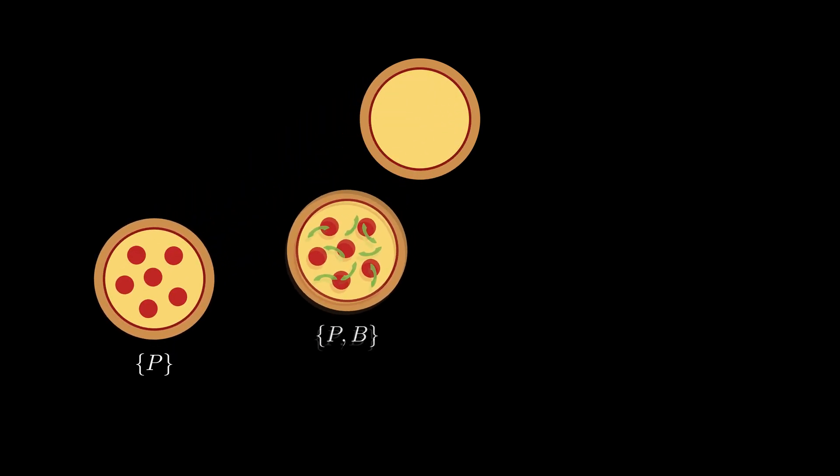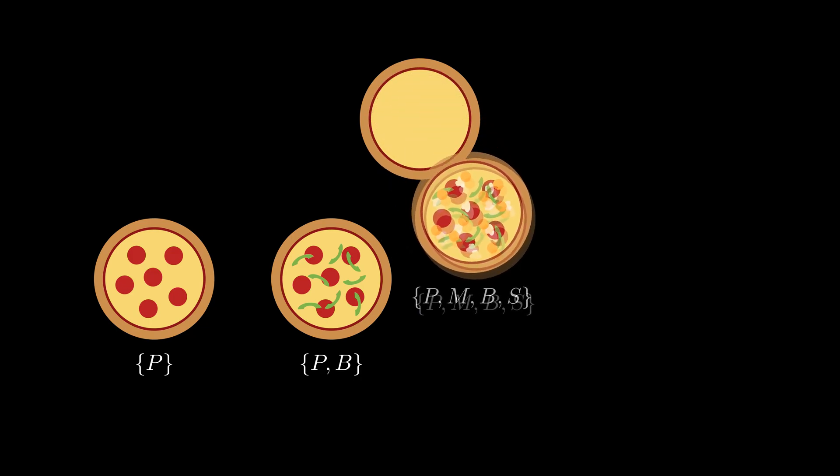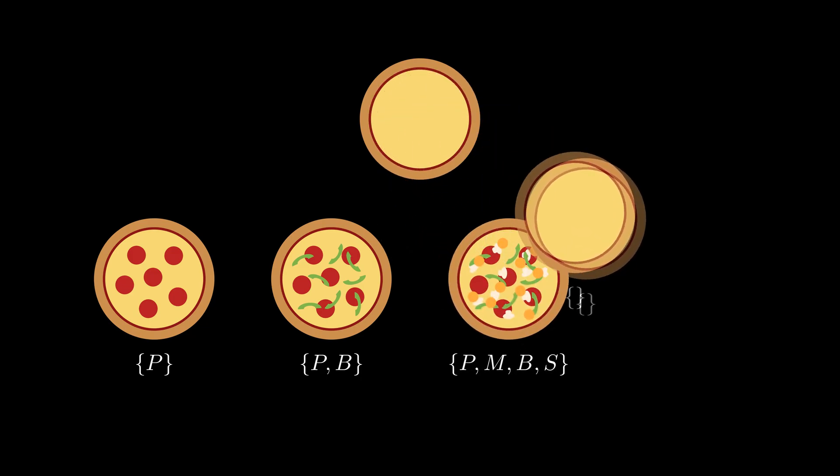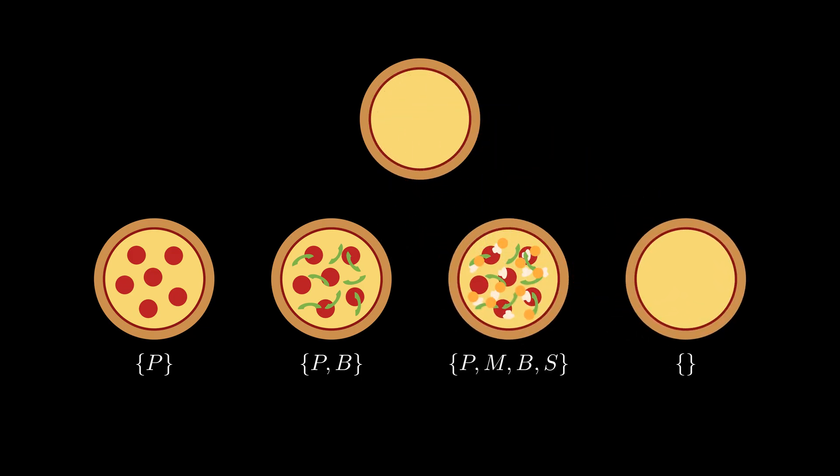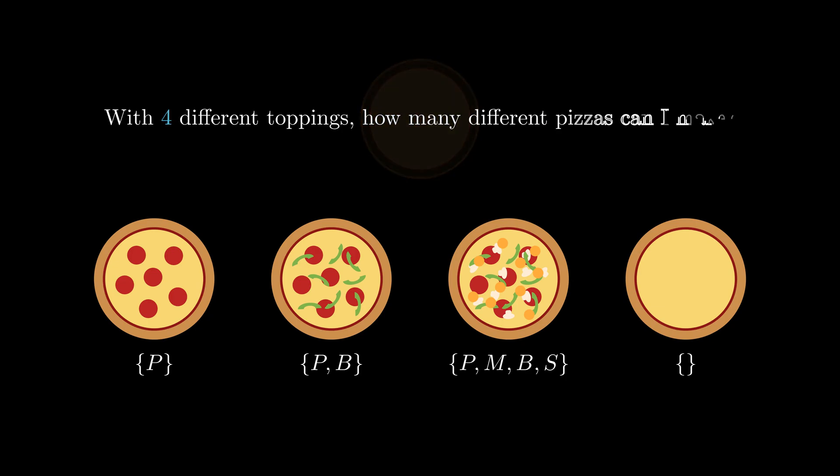I can select any number of toppings for my pizza. I could choose a pepperoni pizza, I could choose a pepperoni and bell pepper pizza, I could choose all four toppings, or even a plain pizza, no toppings. How many different pizzas can I make?